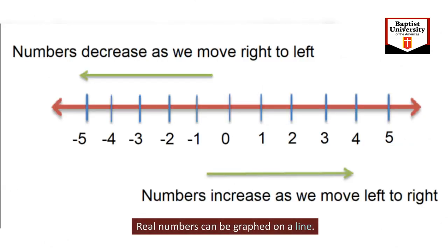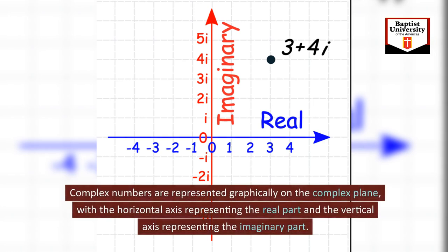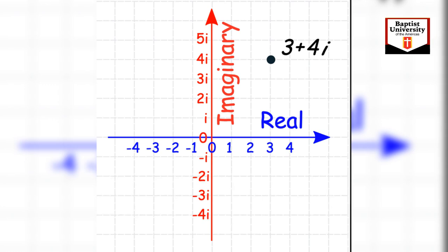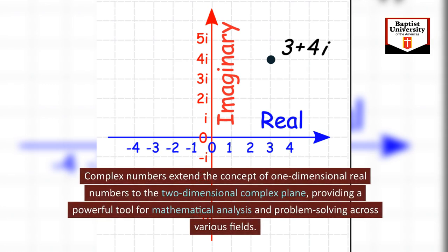Real numbers can be graphed on a line. Complex numbers are represented graphically on the complex plane with the horizontal axis representing the real part and the vertical axis representing the imaginary part. Complex numbers extend the concept of one-dimensional real numbers to the two-dimensional complex plane, providing a powerful tool for mathematical analysis and problem-solving across various fields.